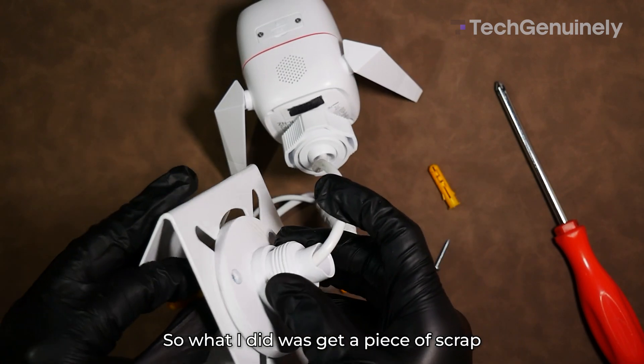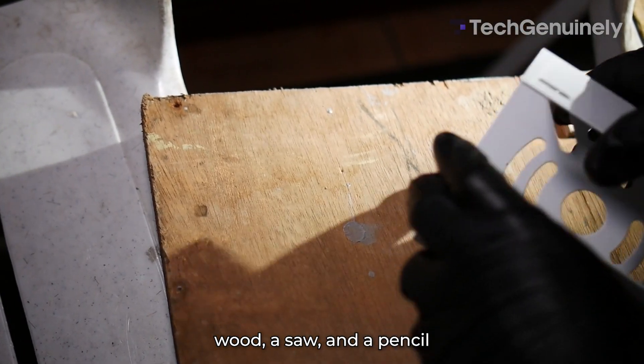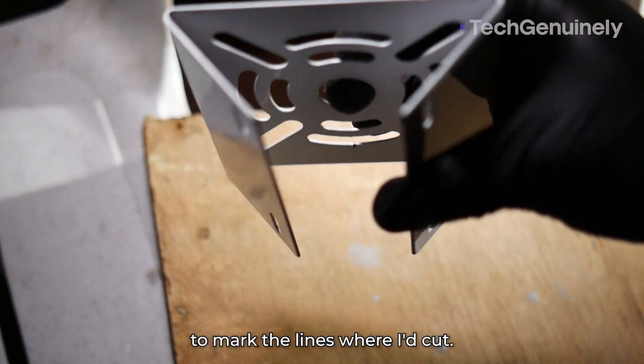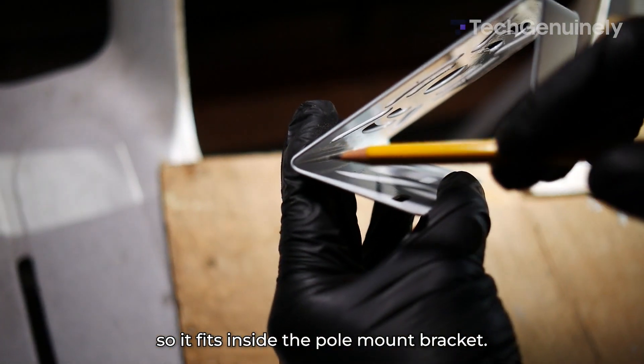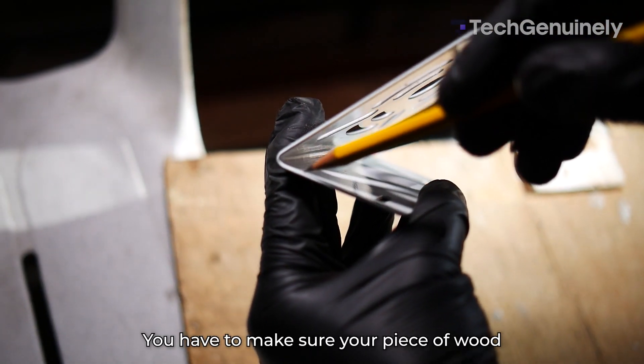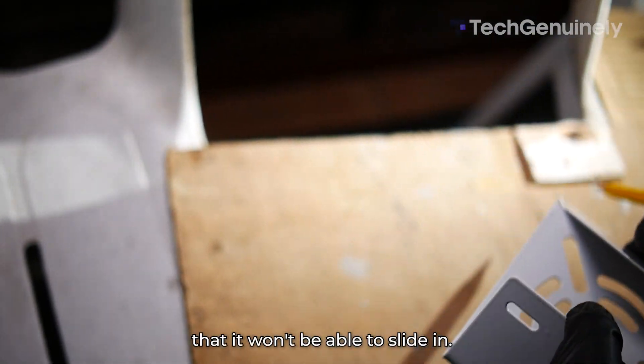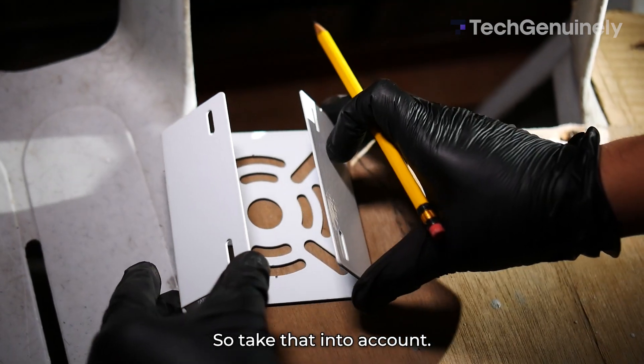So what I did was get a piece of scrap wood, a saw, and a pencil to mark the lines where I'd cut. I have a scrap piece of plywood in this case, and we're going to cut it so it fits inside the pole mount bracket. You have to make sure your piece of wood isn't so thick that it won't be able to slide in.